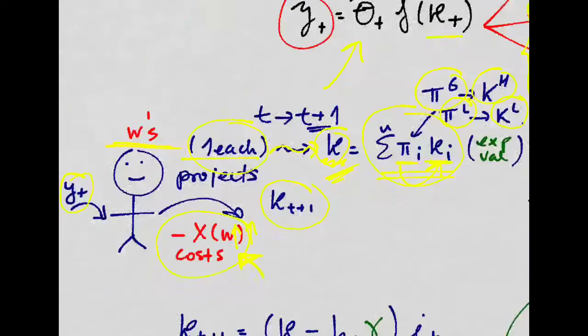So, entrepreneurs are sitting here at T, saying, look, if I invest, I'm going to have to pay this cost, and then I expect to get this amount of capital for each unit of investment I make in the future.